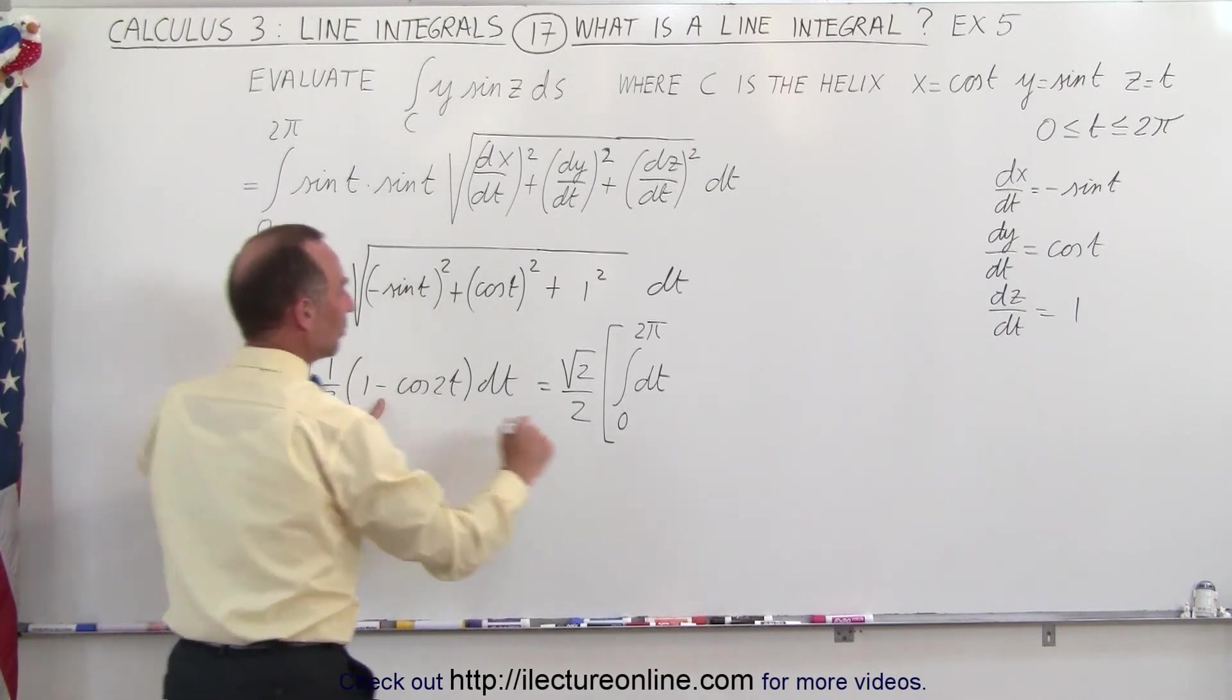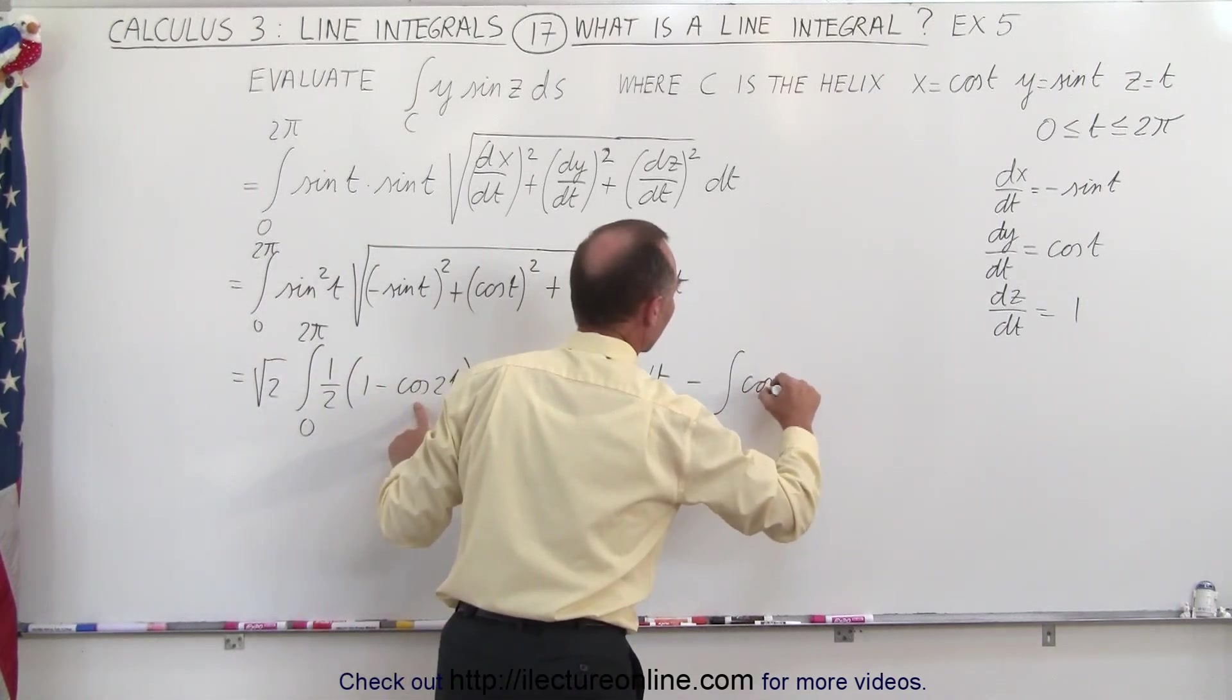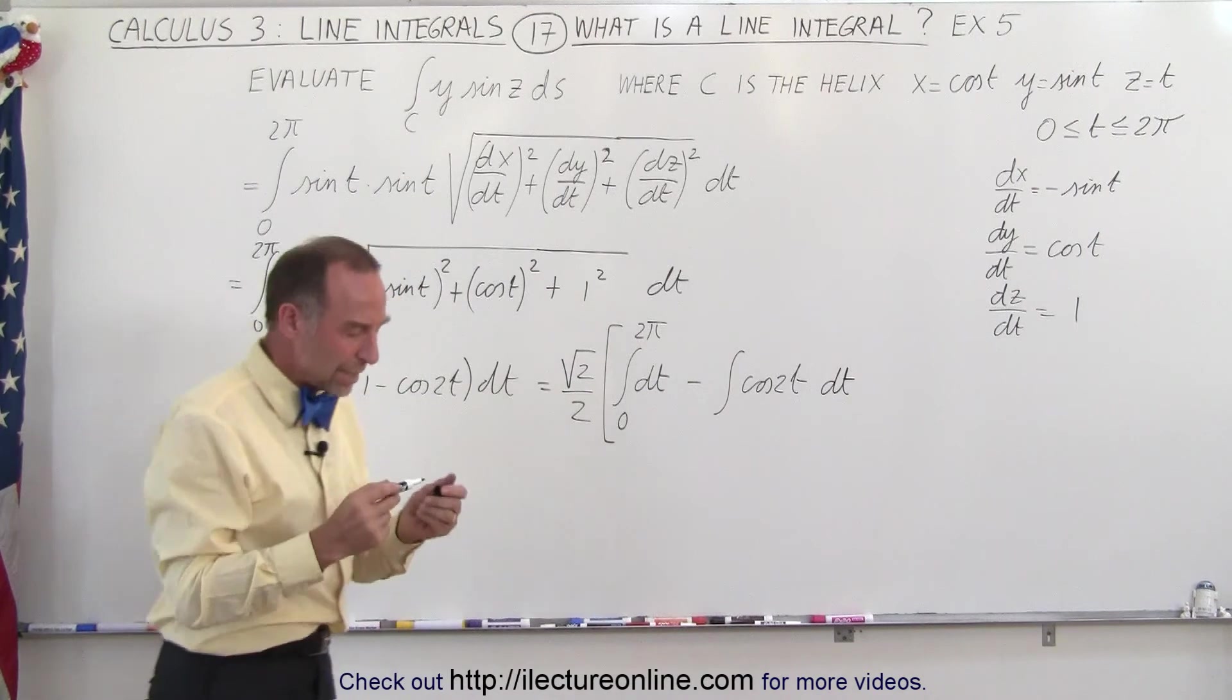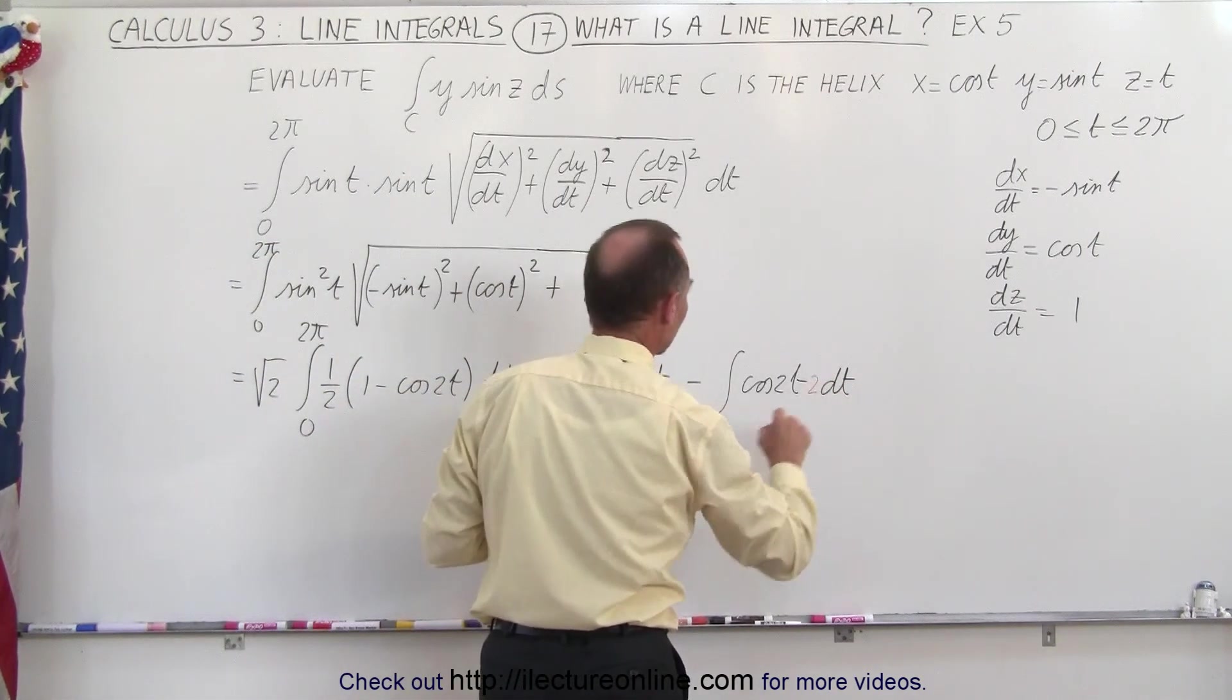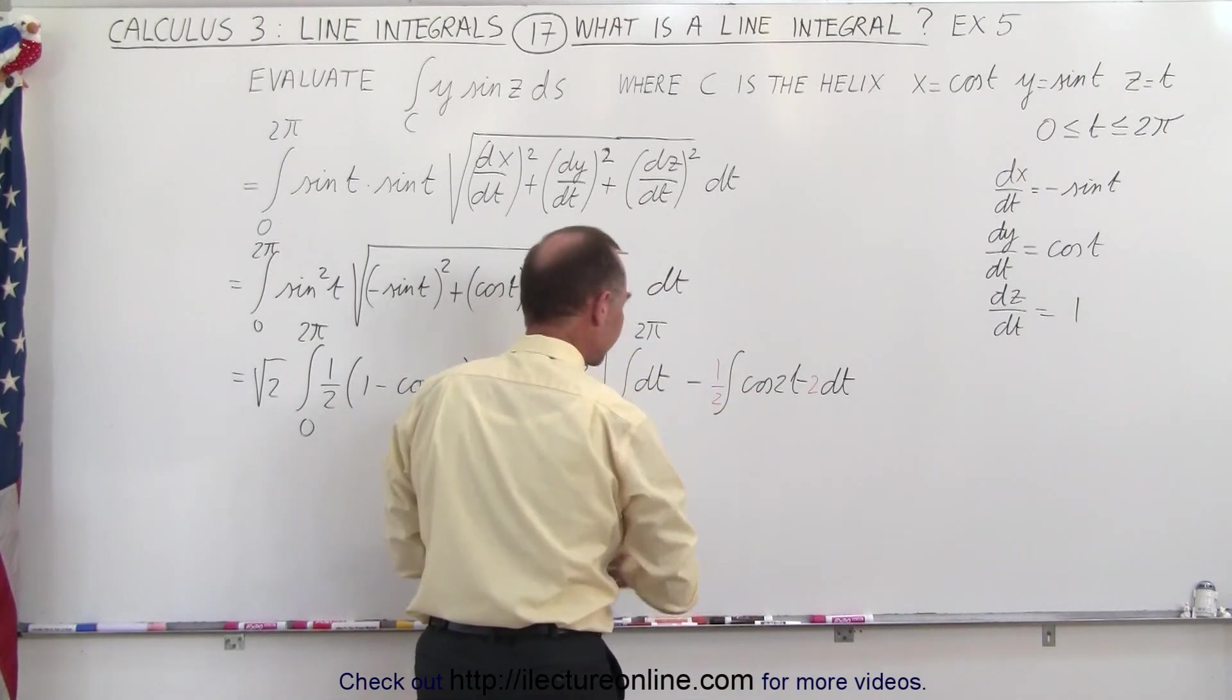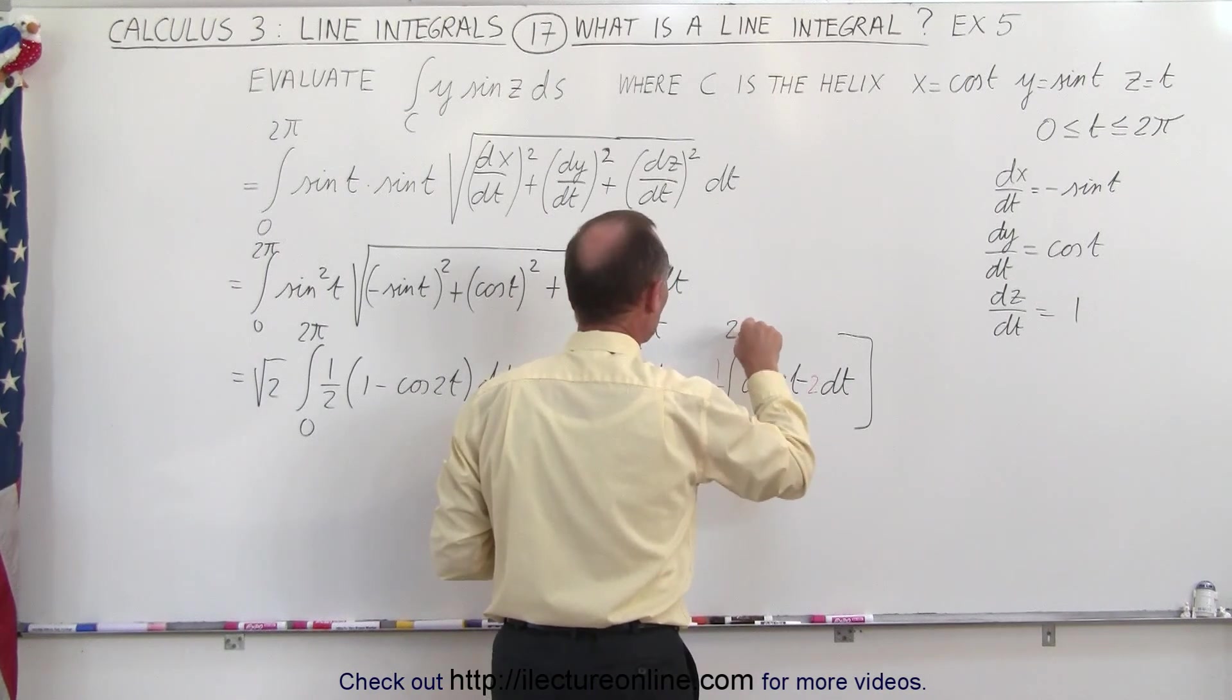We have the minus, so minus the integral of the cosine of 2t, the cosine of 2t times dt, but of course we need a 2 dt there, so we need a proper differential, and so we need the 1/2 in front to compensate for that, and the limits of integration are from 0 to 2π.